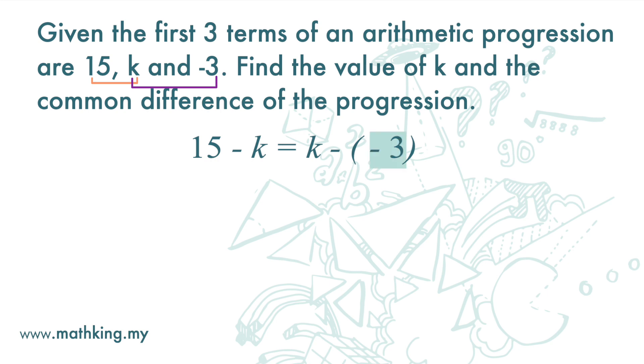Let's move negative 3 over to the left-hand side and negative k to the right-hand side. And we get 18 equals 2k. k equals 9.